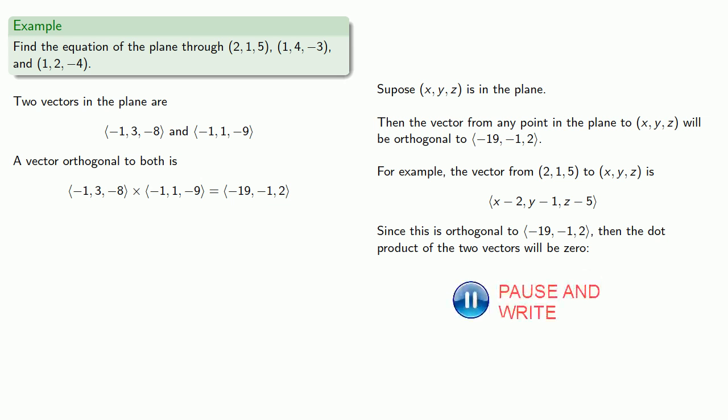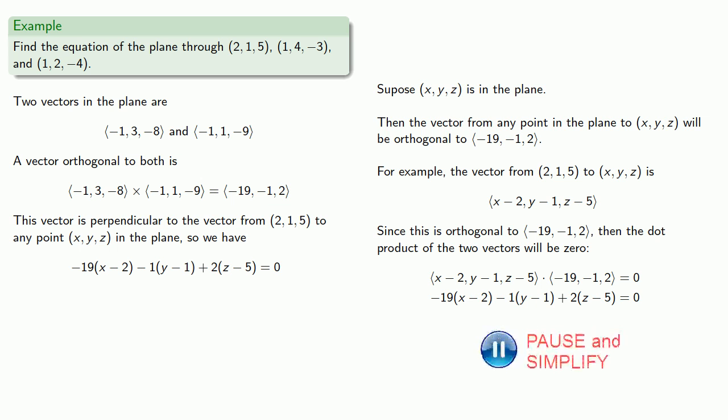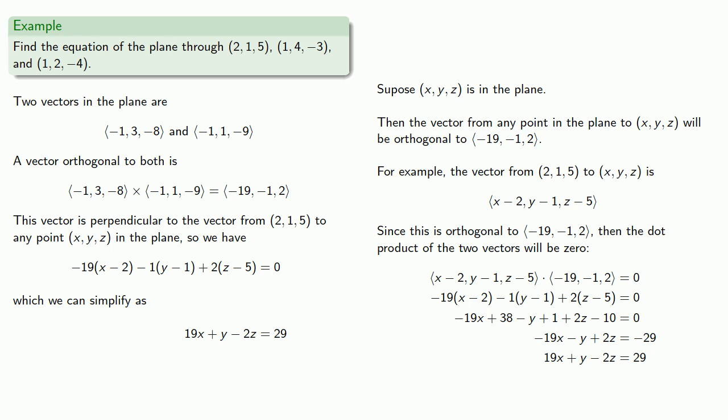Well, I know how to set up the dot product. I know how to find the dot product. And we can do a little algebra. Now, while we don't have to do anything else, it's traditional to have the constant over on the right-hand side. And it's aesthetically pleasing not to have a negative leading coefficient. So let's multiply through by negative 1. And that gives us our equation. The important thing to understand is everything after this dot product equal to 0 is really just an algebraic simplification to make our final answer look nice.